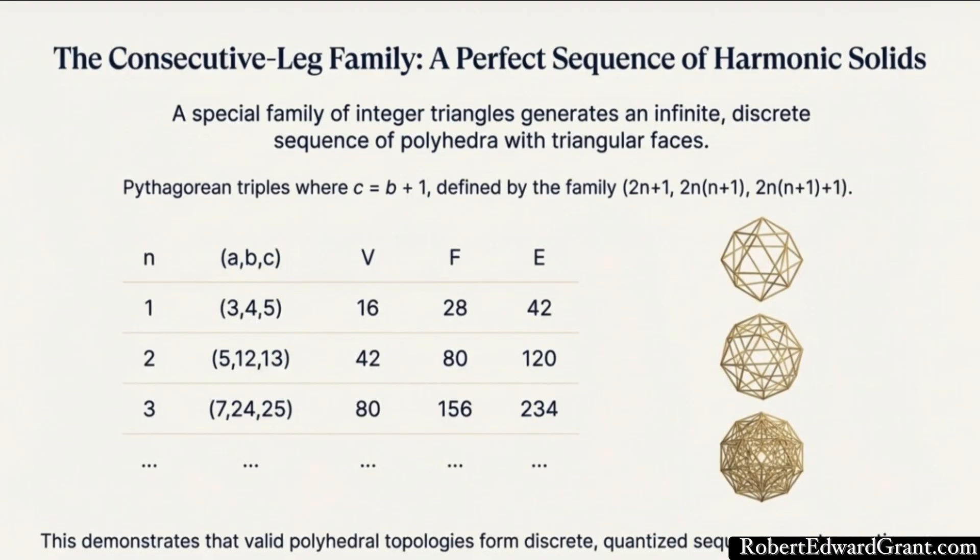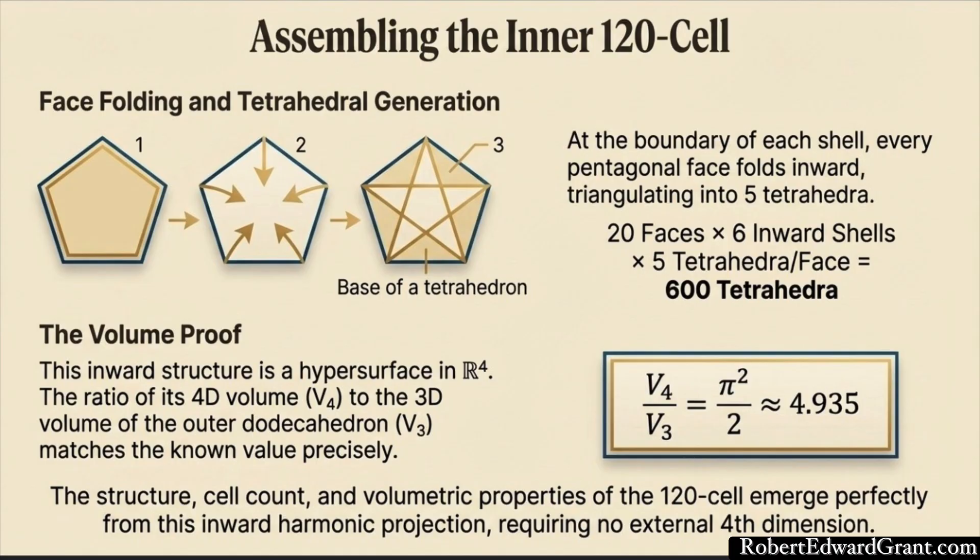Moving from these 3D spheres, the Grant projection theorem also claims it can generate 4D structures. Specifically, one of the most complex regular shapes, the 120-cell. It does this using a triangle based on the golden ratio phi. This is where things get really wild. This is the most complex geometry presented, and it all comes from the Kepler triangle, a specific right triangle with sides of 1, the square root of phi, and phi.